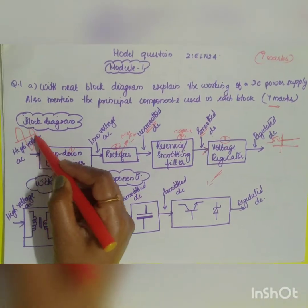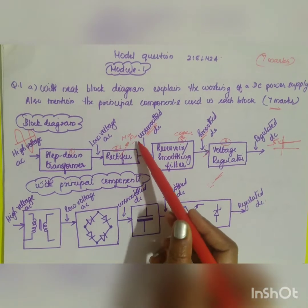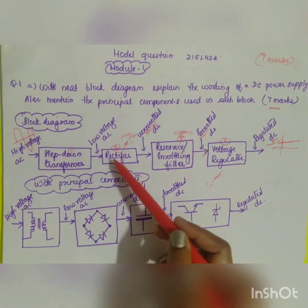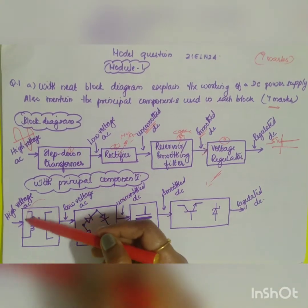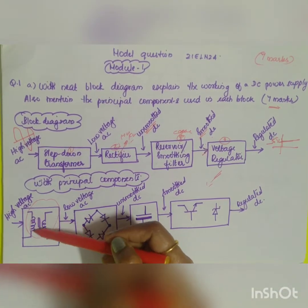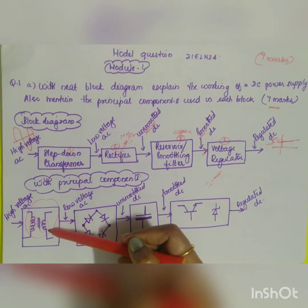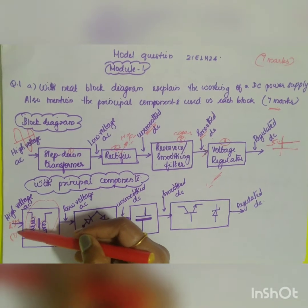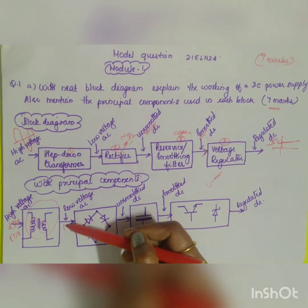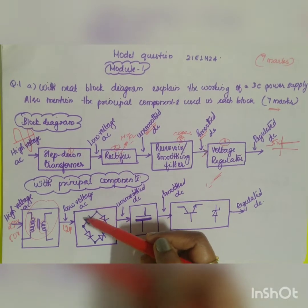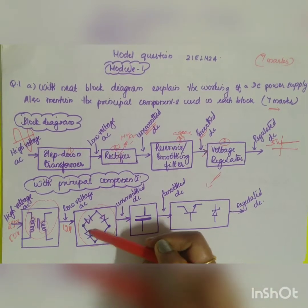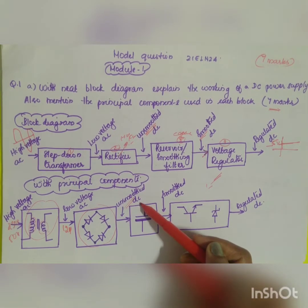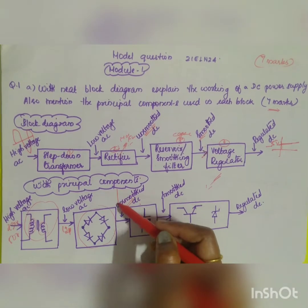The AC signal is converted into a DC signal. Now we include the principal components for each stage. For the step-down transformer, the number of turns is higher in the primary and lower in the secondary, so the 230V 50Hz high voltage signal is down-converted to, for example, a 12V low voltage AC signal, which is given to the bridge rectifier.